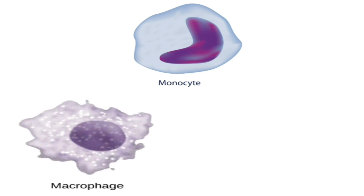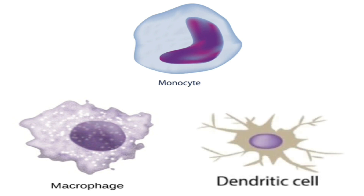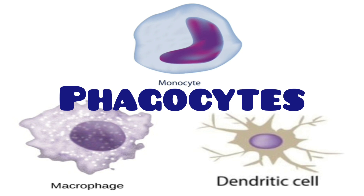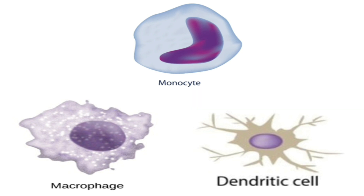Some monocytes migrate into tissues and differentiate into macrophages, which stay there. Other monocytes differentiate into dendritic cells, which have the ability to move through blood, lymph, and tissues. Monocytes, macrophages, and dendritic cells are all phagocytes and can produce cytokines to amplify inflammation. Both dendritic cells and macrophages can perform antigen presentation.